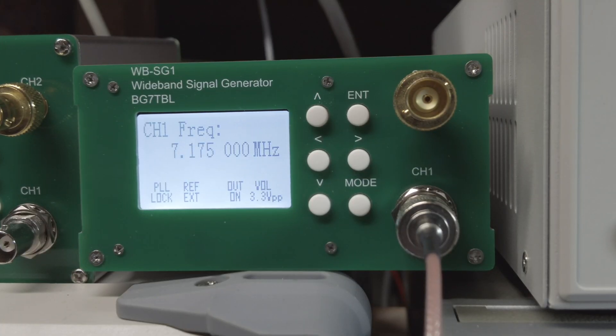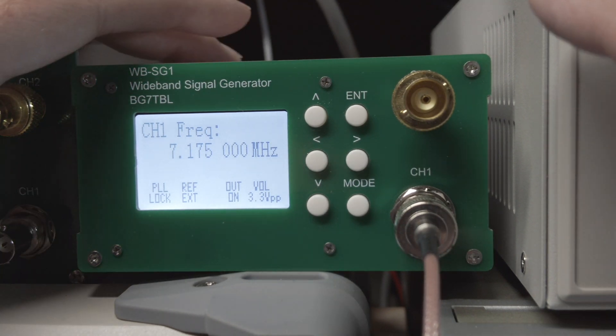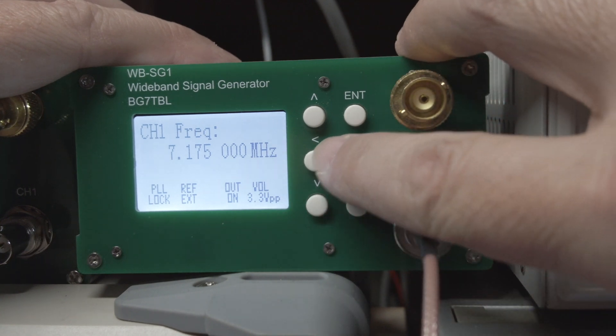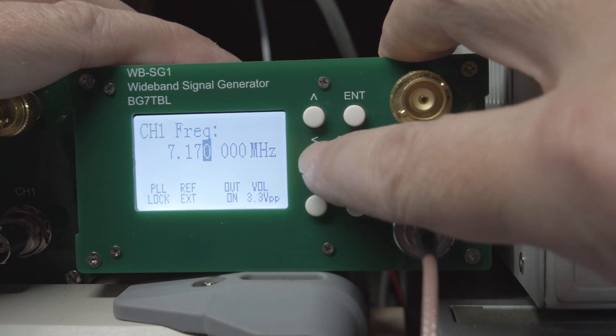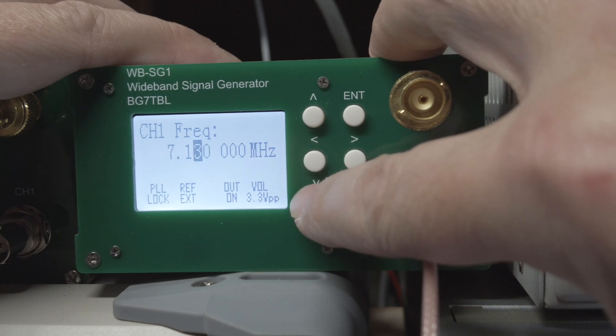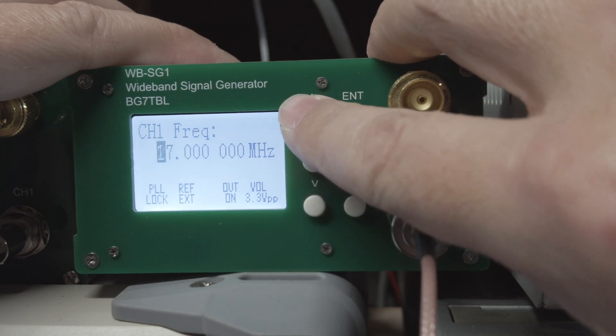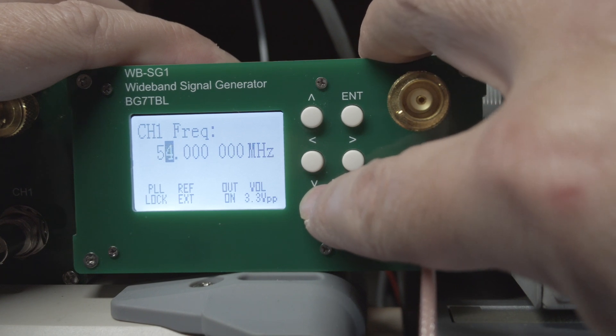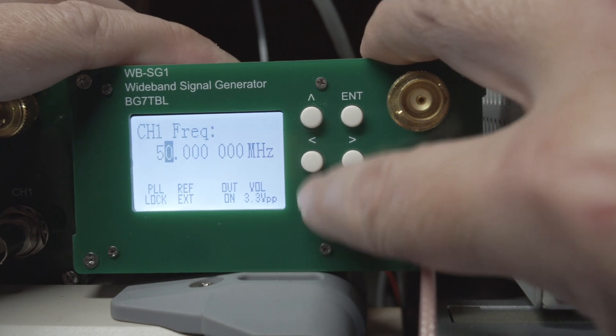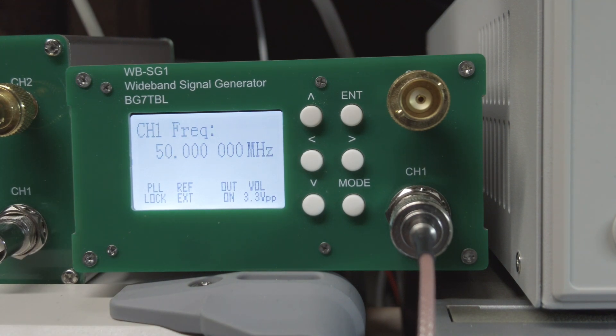Okay, now let's set the RF signal generator to 50 megahertz. Okay, there's 50 megahertz, now let's take a look at it over on the spectrum analyzer.